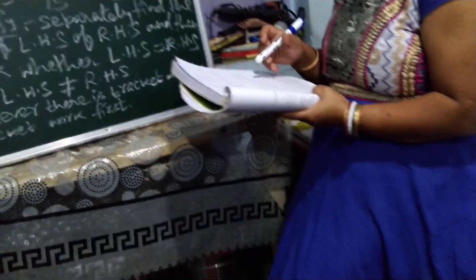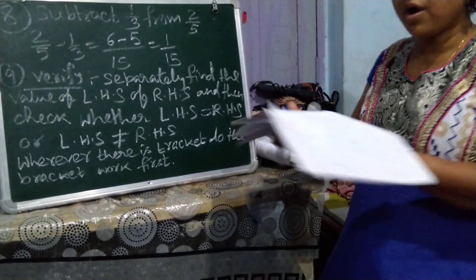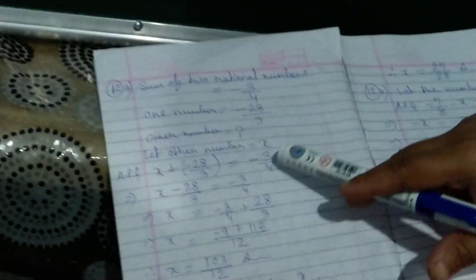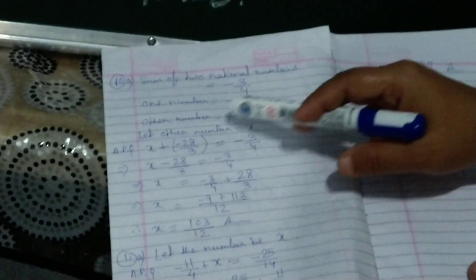In that way you will do questions 8 and 9. For question 10: the sum of 2 rational numbers is given as minus 3/4, and one number is minus 28/3. Find the other number. Let the other number be X. So X plus (minus 28/3) equals minus 3/4. Solve for X to get the answer.